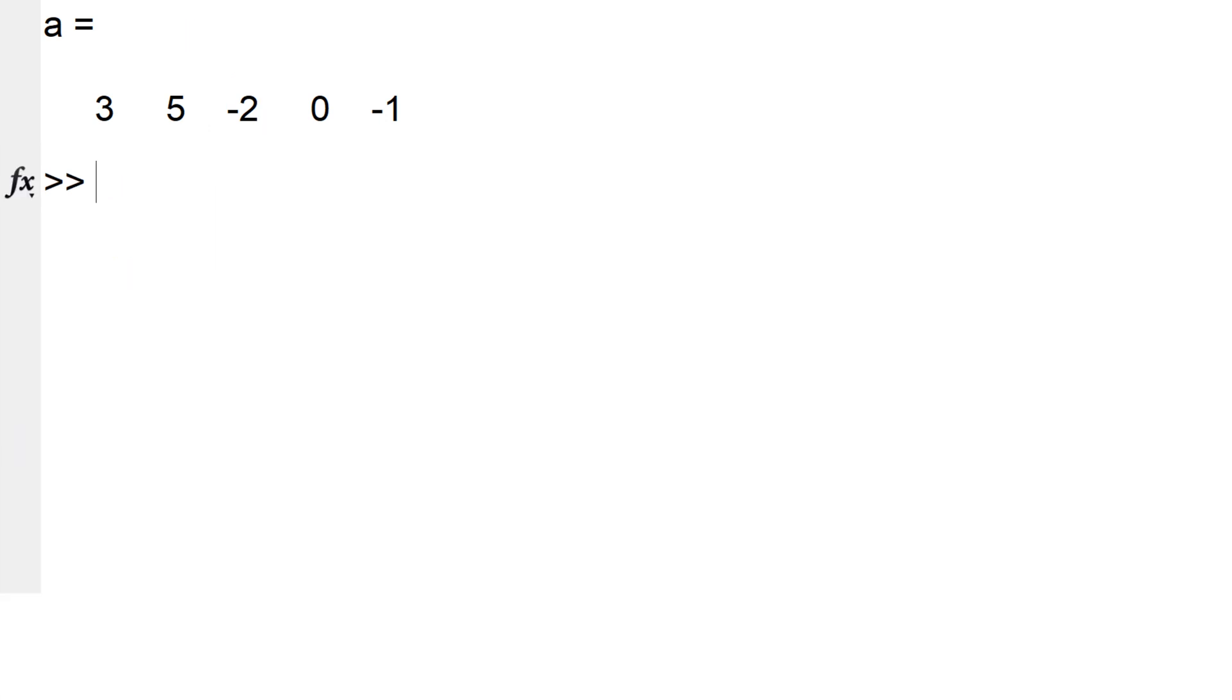If you want to access the last element, you can use A 5, which is minus 1. Or you can type length A, which is the same result. What about replacing minus 2 with 2? You can simply type A 3 equals 2, and then you can identify the change. You can also add element at the end. For example, you can add minus 1 as a sixth element by typing A 6 equals minus 1.